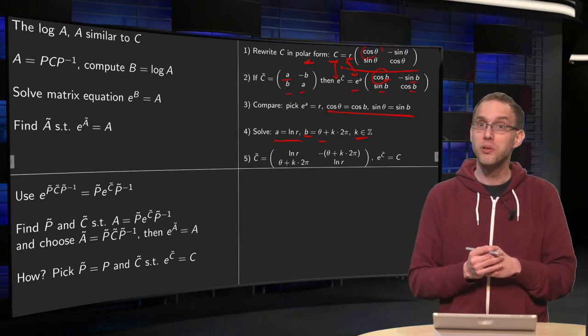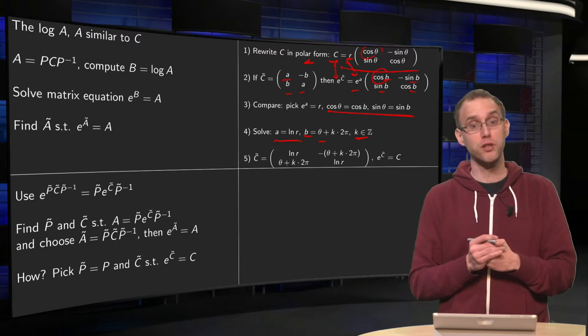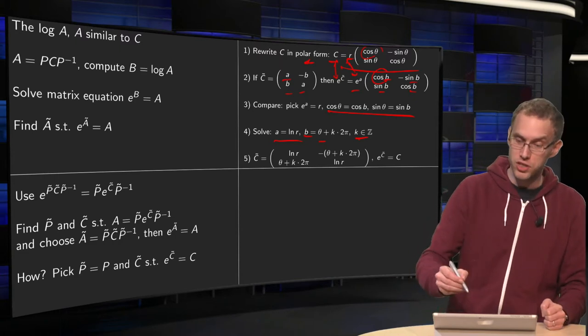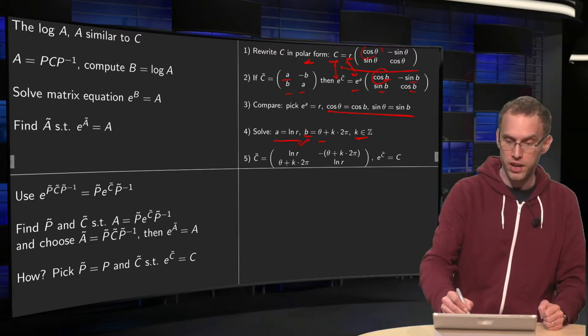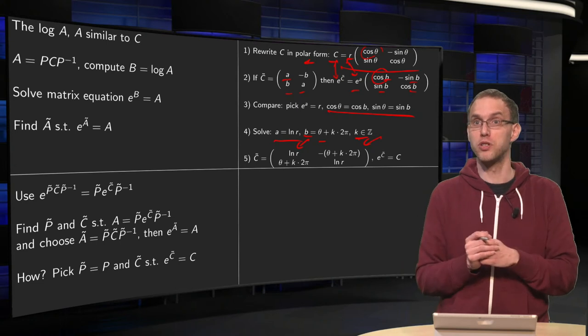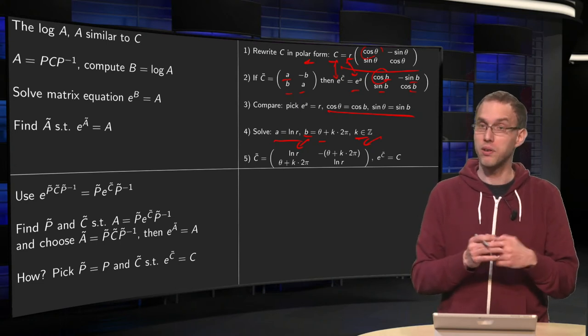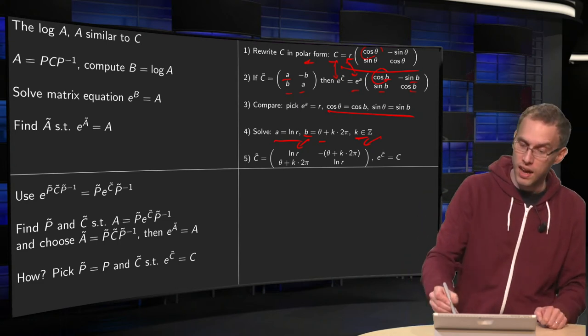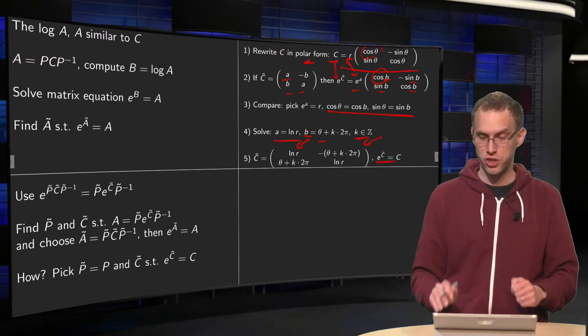So you see actually you have many solutions, infinitely many solutions for this problem. So your C̃, here you put your A, your ln of R, and here you put your minus theta plus k times 2π, so you can pick any k you like, and that leads to e to the power of C̃ equals your C.